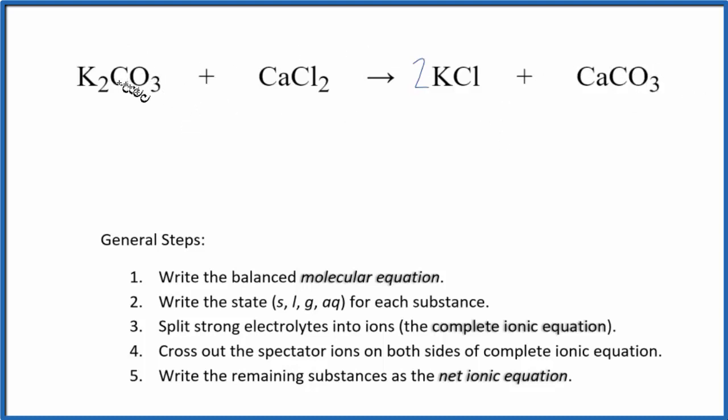Next, we need to write the states. Carbonates in general, they're insoluble. They don't dissolve in water except for carbonates with elements in group 1. Potassium is in group 1. So this is going to be soluble. And we write AQ. That means it's aqueous. Since it's soluble, it dissolves in water. It splits apart into its ions.